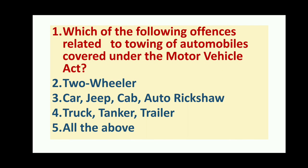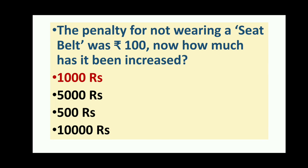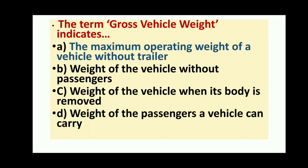Offenses related to towing of automobiles under the Motor Vehicle Act cover two-wheelers, cars, jeeps, auto rickshaws, trucks, tankers, and trailers — all of the above. The penalty for not wearing a seat belt was 100 rupees earlier; it has now been increased to 1,000 rupees. The term gross vehicle weight indicates the maximum operating weight of a vehicle without a trailer.